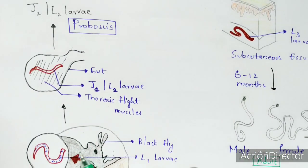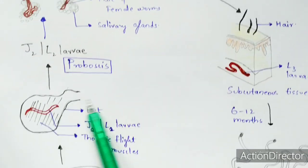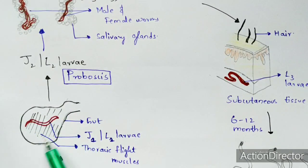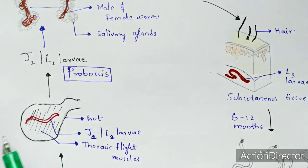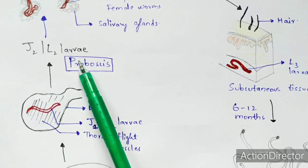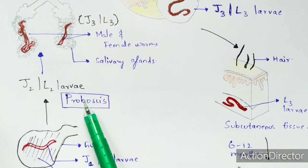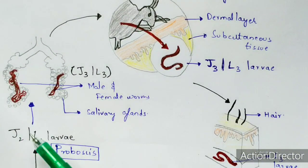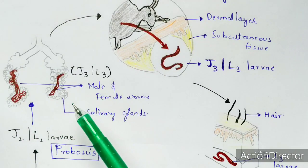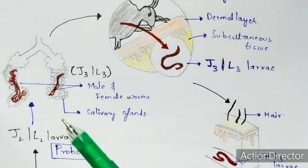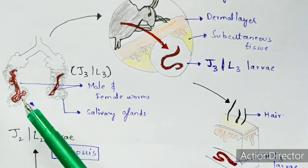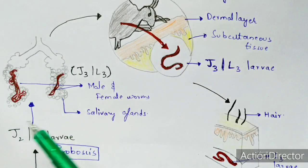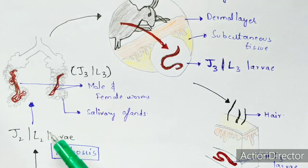Once inside the gut of the black fly, the L1 larvae migrate from the gut into the thoracic flight muscles, where they transform into J2 or L2 larvae. From there, they are transported to the salivary glands of the insect.